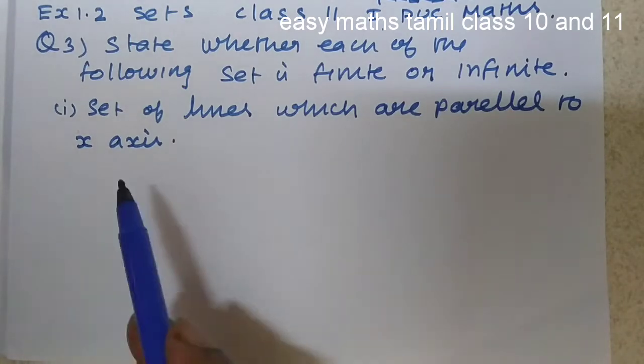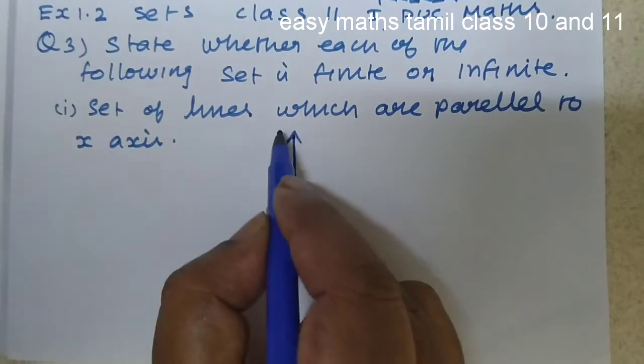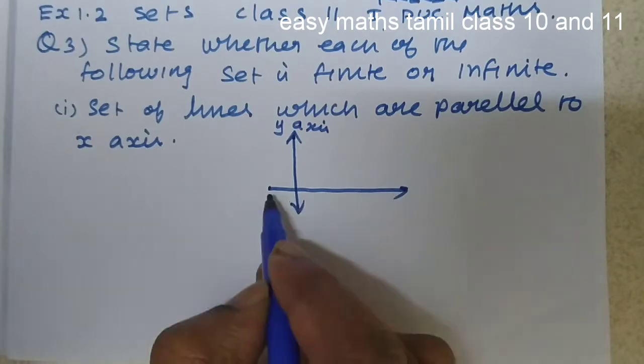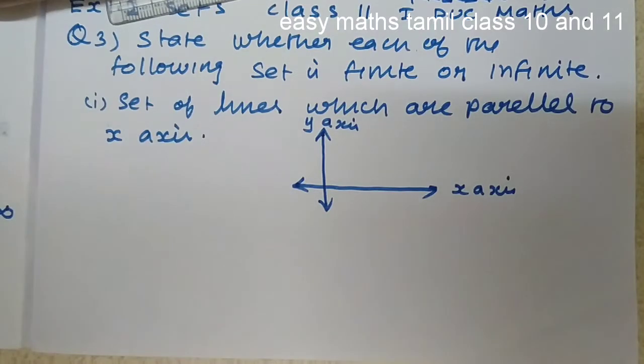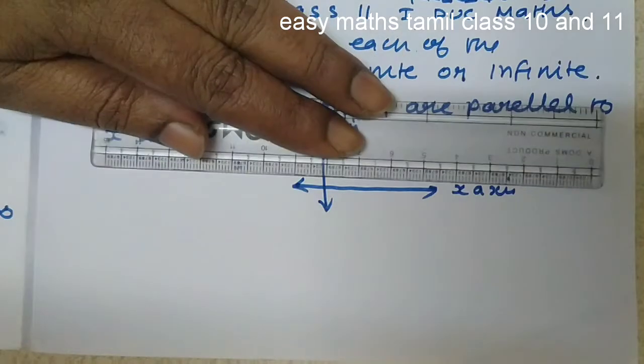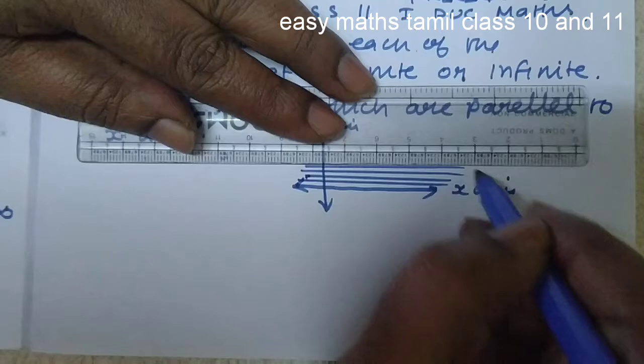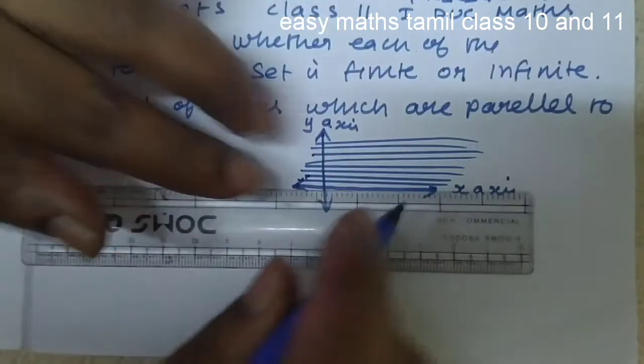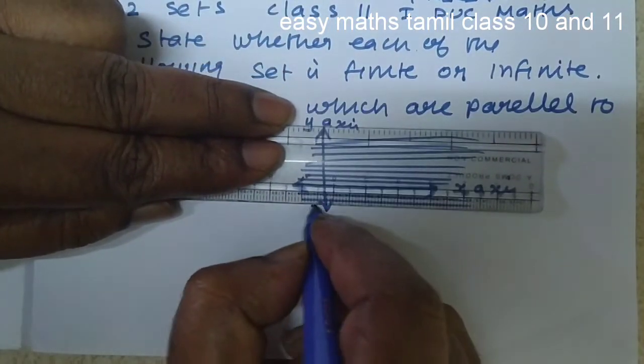Set of lines which are parallel to x axis. Y axis, this is x axis. Let us see how many lines we can draw parallel to this x axis. 1, 2, 3, 4, 5, 6, 7, 8, 9, 10, 11, 12...